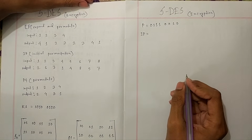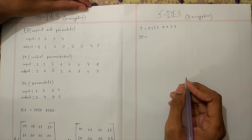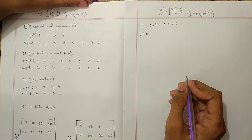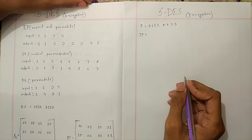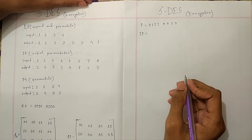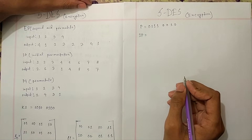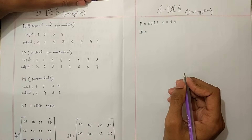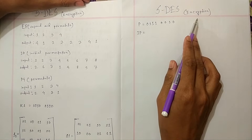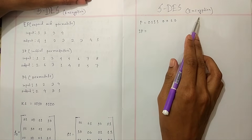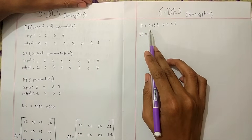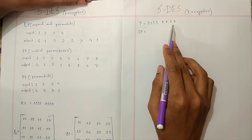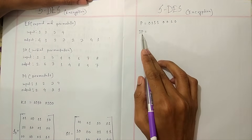In this video I show you SGS encryption technique. In the previous video I showed you SGS key generation. In SGS encryption the given value is plain text which is 8 bits, and we have to evaluate the IP value.